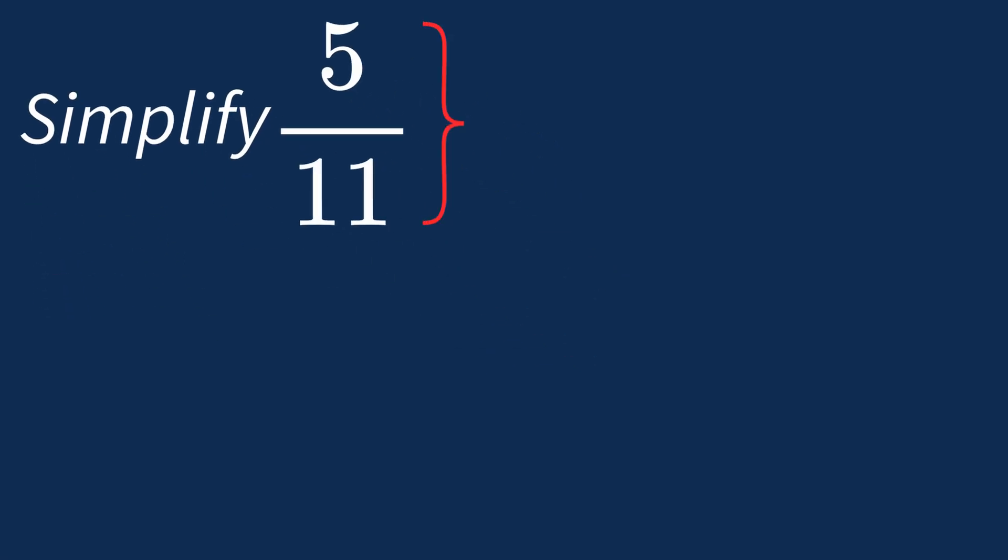When simplifying a fraction like 5 over 11, the first step is to check if there's a common factor between the top number, the numerator, and the bottom number, the denominator.